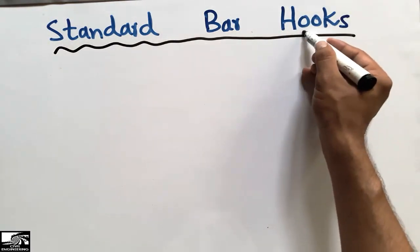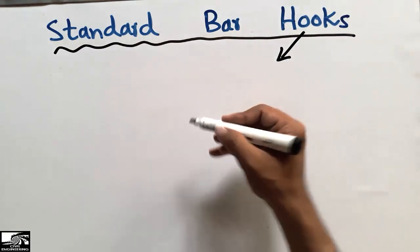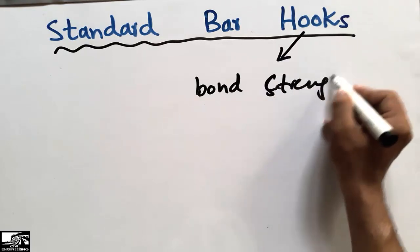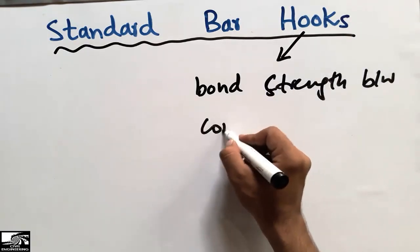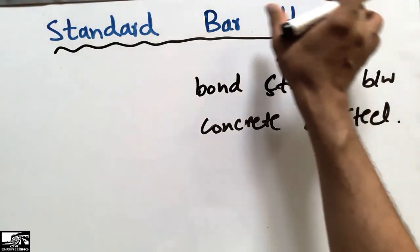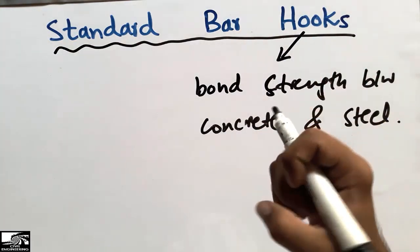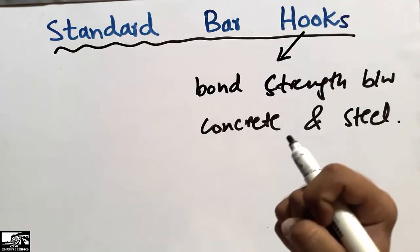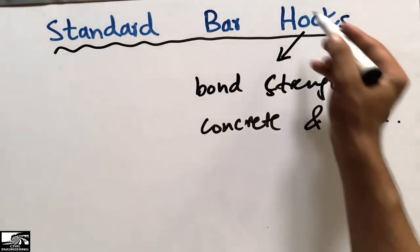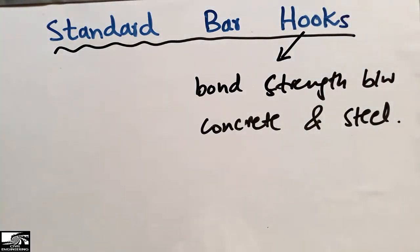First I will show you why we provide hooks in the reinforcement. We provide hooks in reinforcement to increase the bond strength between the concrete and the steel. Because of this hook, it makes a perfect bond and increases the strength capacity of any structure by providing good hooks in the reinforcement as per different standards.